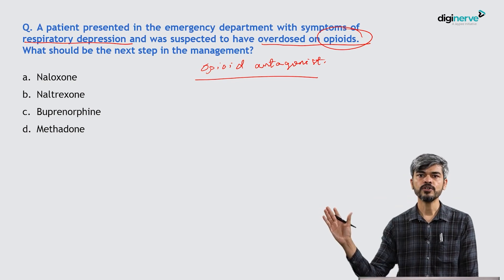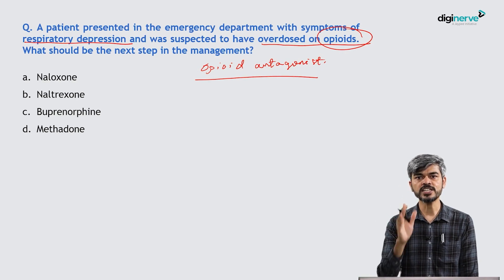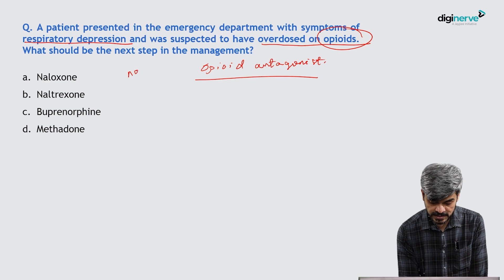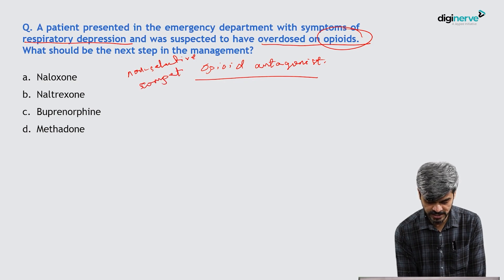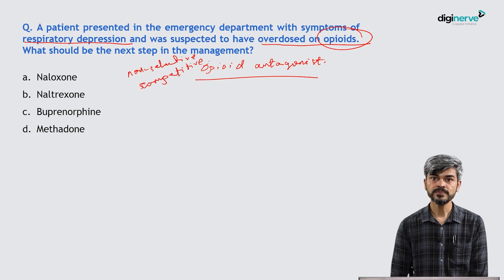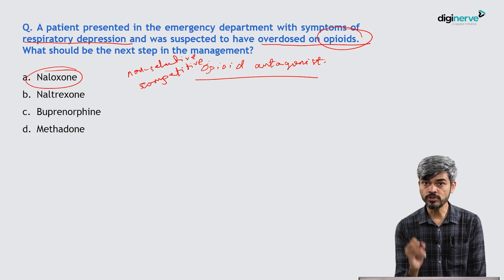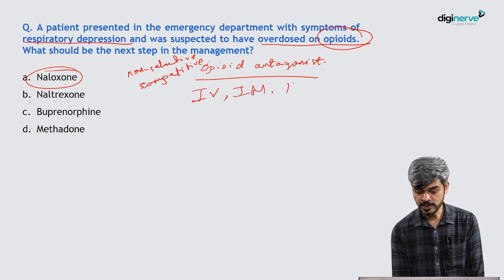You need a non-selective competitive opioid antagonist. Such a drug would be Naloxone, and Naloxone works either through IV, IM, or as a nasal spray. You cannot give it as a tablet.